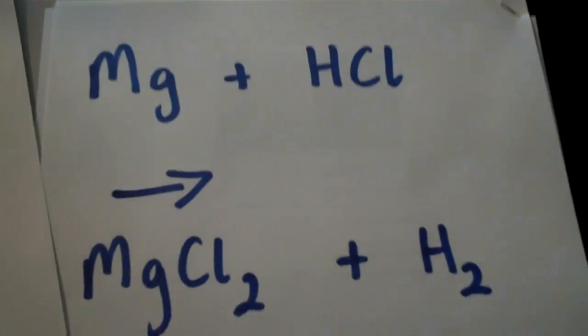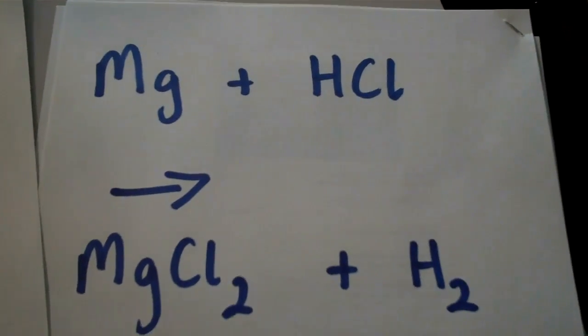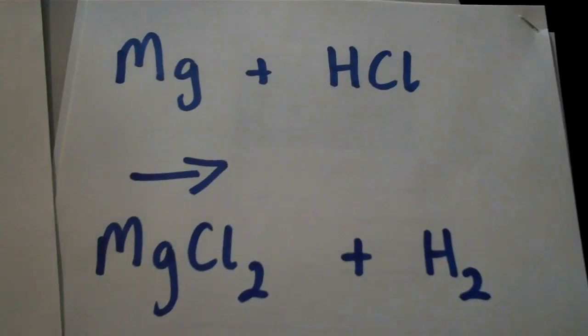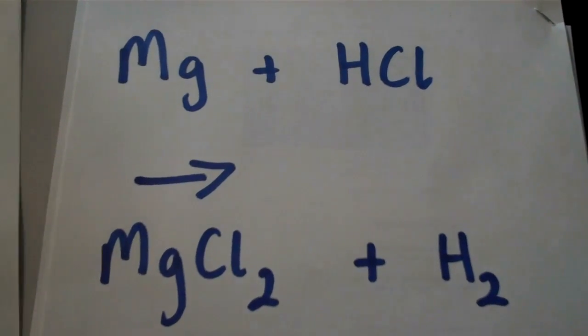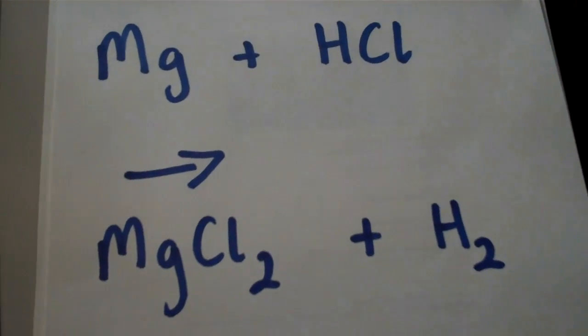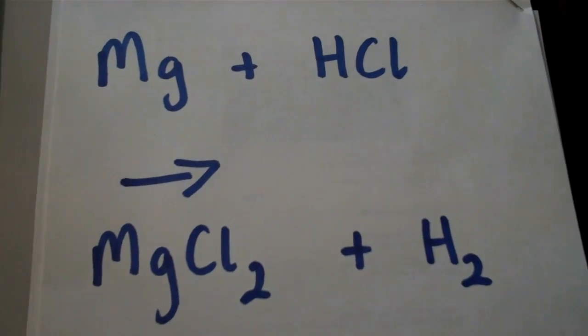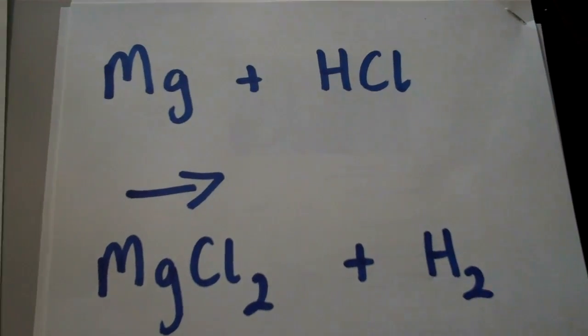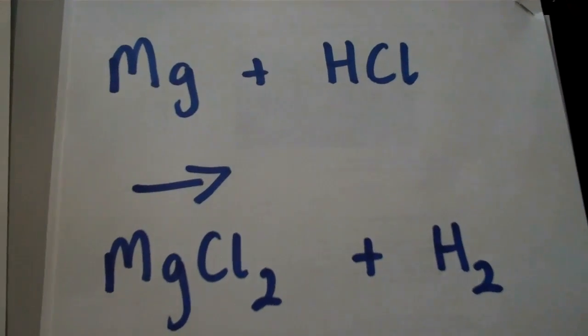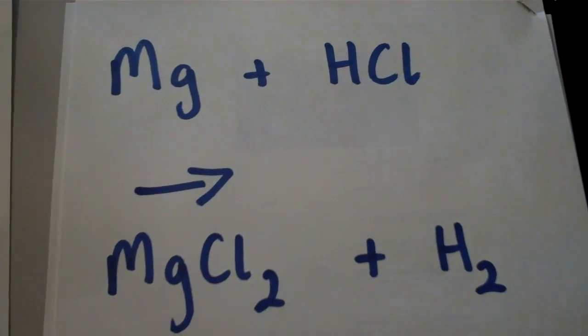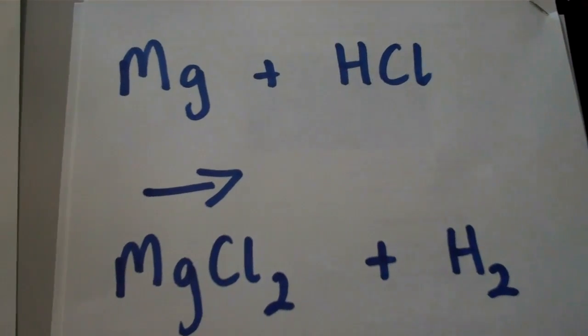We're going to investigate how heat affects the speed of a chemical reaction. Last week we saw that a catalyst, an enzyme, can speed up a reaction. How does temperature affect the speed?